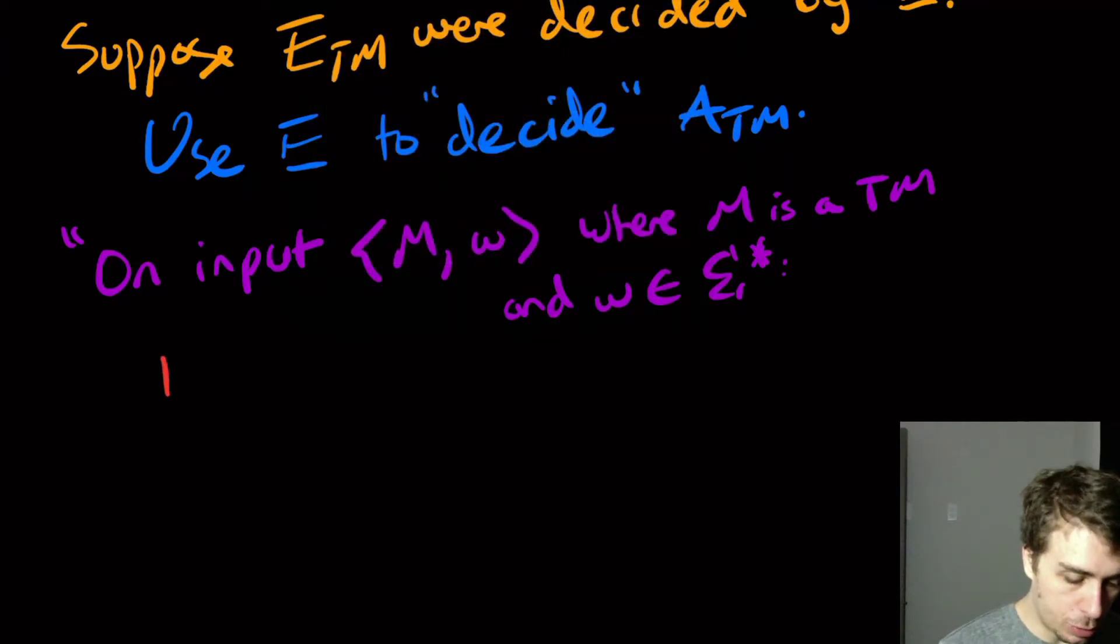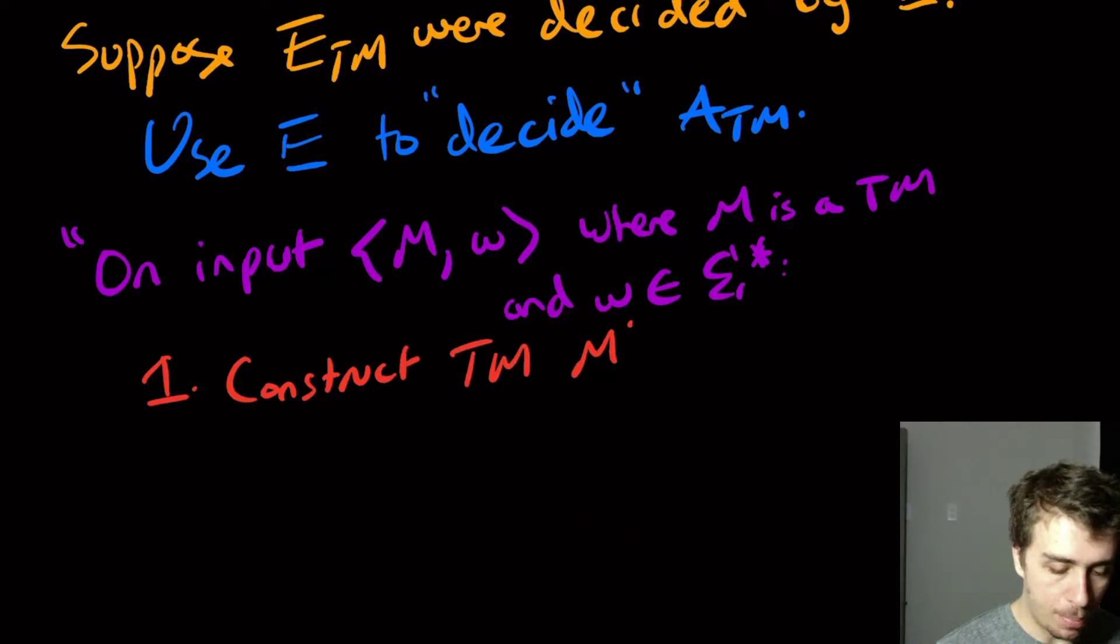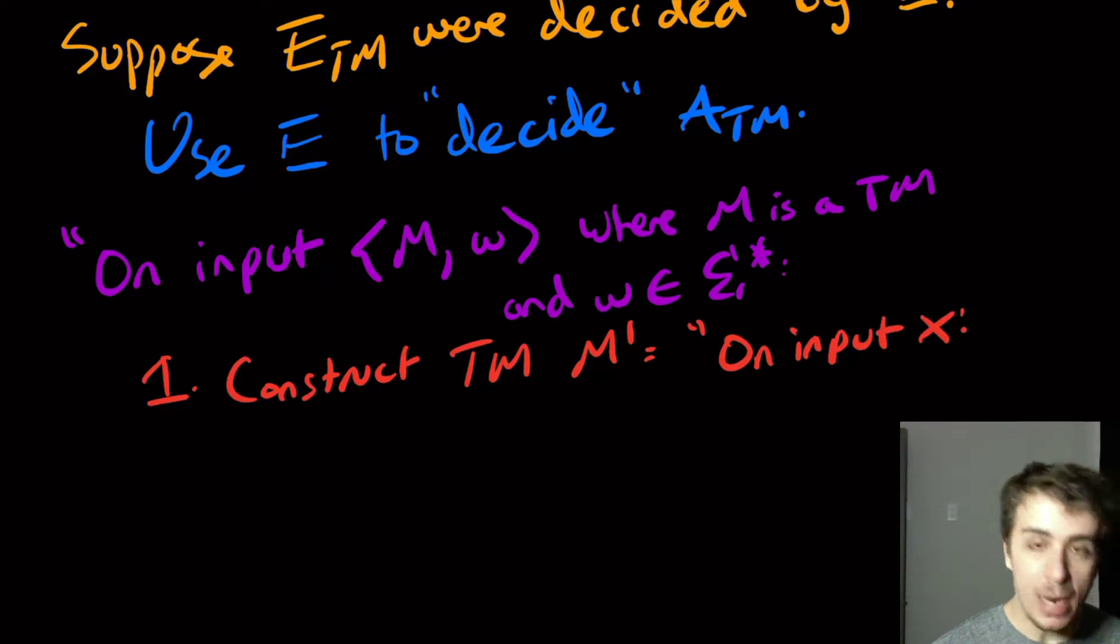So we're going to, as the first step, and this is common to do, we're going to construct a Turing machine M' and its job is to, on whatever input it gets, it's going to embed the instructions of this machine in somewhere, so that this guy's language is empty exactly when M accepts W, or the exact opposite, it depends. But here we're going to have it correspond.